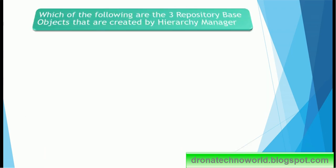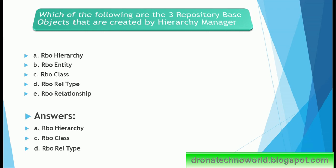Next quiz question. Which of the following are three repository base objects that are created by Hierarchy Manager? Look at these objects because they are quite confusing. If you are new, it's very difficult to remember these names. So I would recommend to go through your MDM hub and see these objects. That is the easiest way to remember this. The options are: RBO Hierarchy, RBO Entity, RBO Class, RBO Relation Type, RBO Relationship. The correct answer is RBO Hierarchy, RBO Class, and RBO Relationship Type. All these tables get created. RBO Entity and RBO Relationship, there are no such tables.